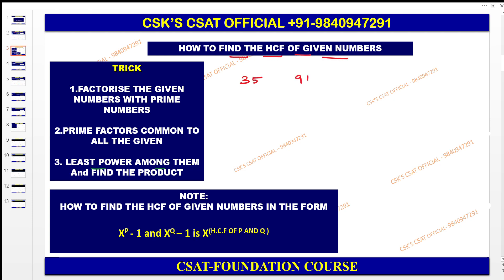You know the prime numbers right? Prime numbers is nothing but that it has only two factors, which is nothing but itself and one.